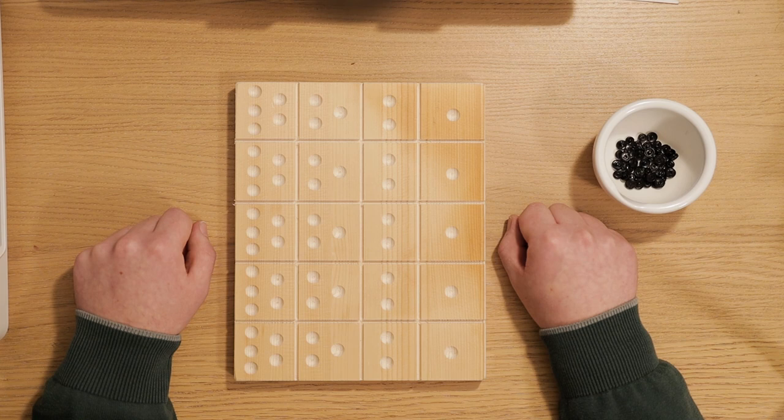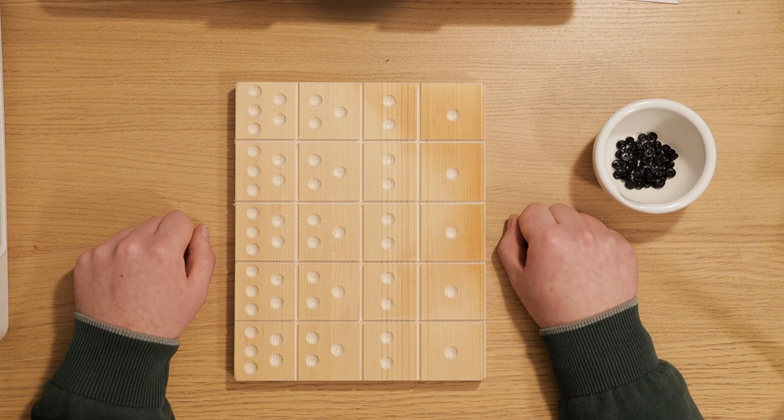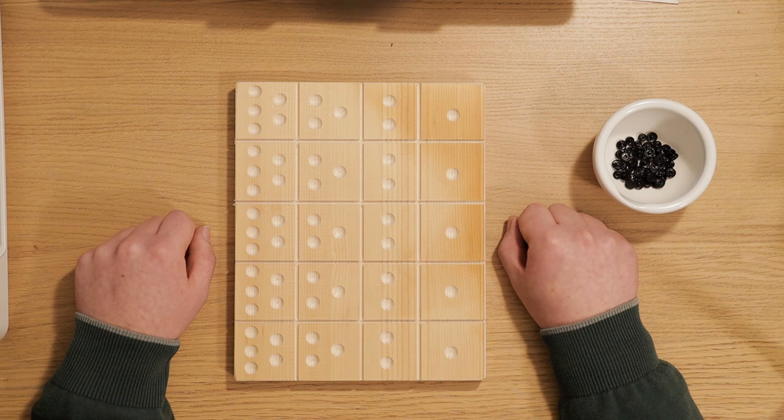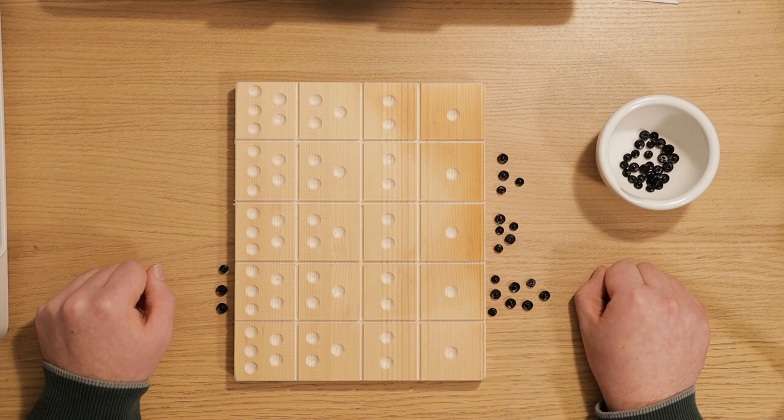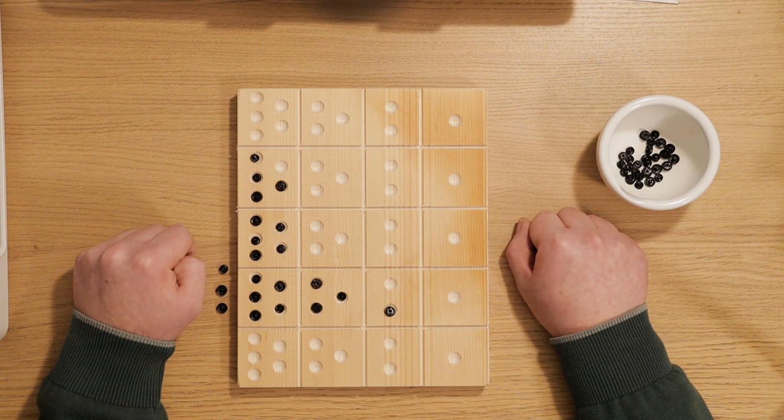So, the first one would be 153 times 30. We already calculated 153 times 3 equals 459 in the preparation. So, we can just multiply that by 10, which gives us 4590. We then place that number to the right of the Yupana and 30 to the left, to signify that this factor summand has been taken into account. And then we transfer that to the board.